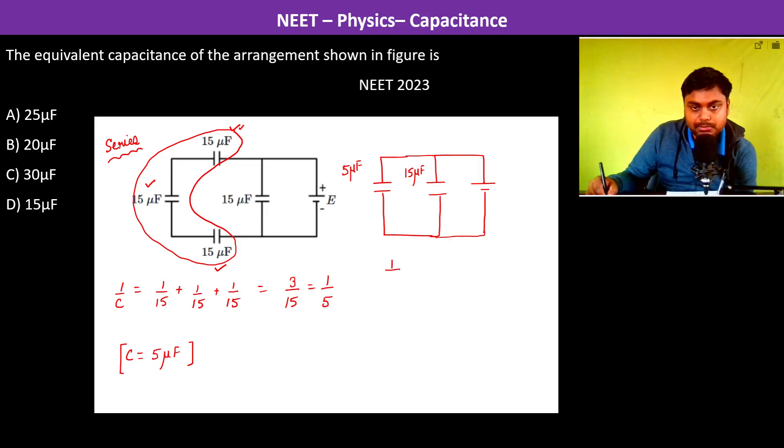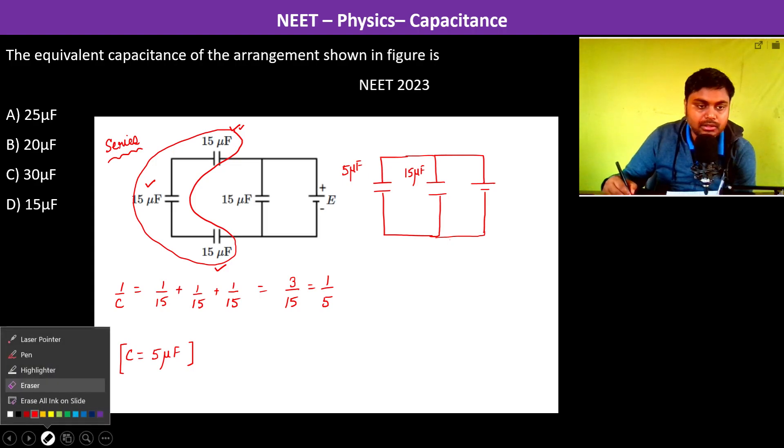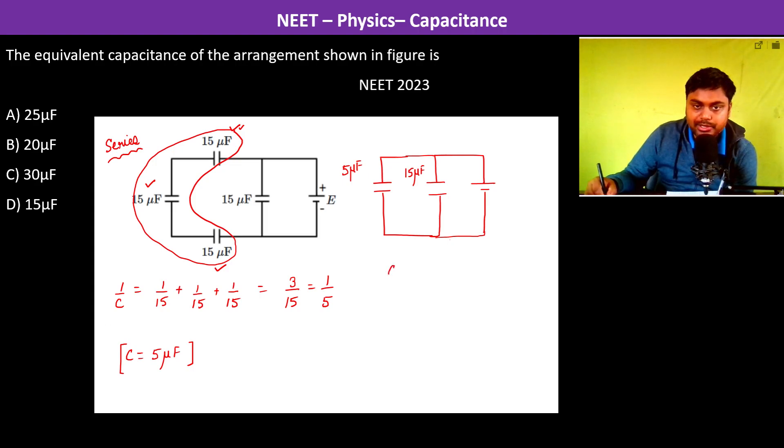So now the capacitance will be 1 by C equivalent. Oh no, now they are in parallel. So we will just add it up. So the C equivalent will be 5 plus 15, which is going to be 20 micro Farads.